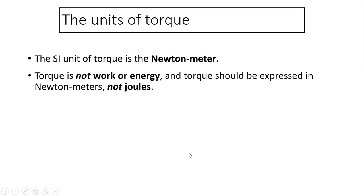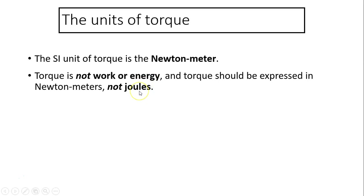The unit of torque: torque equals force times lever arm. Force is in newtons, lever arm is in meters, so the unit of torque is newton times meter. Remember, this is similar to work, but torque is not work — so we never use joules for torque. We always use newton times meter.